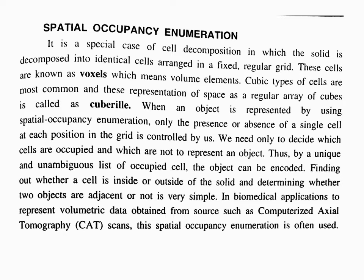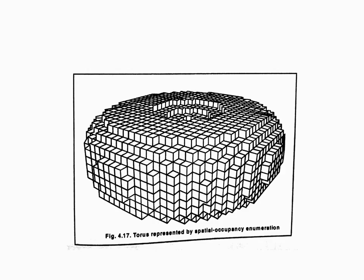Next one is spatial occupancy enumeration. This is a special case of cell decomposition. The solid is decomposed into identical cells arranged in a fixed and regular manner. These cells are known as vox cells, which means volume elements. Vox cells are arranged fixed and identically. Cubic types of cells are most common, and these representations of space are regular cubes called cuberlite.